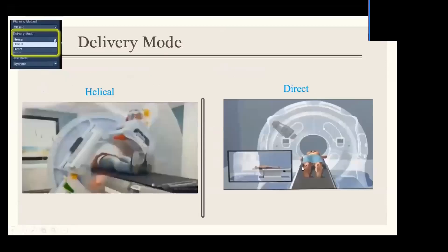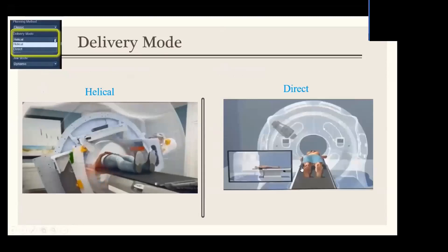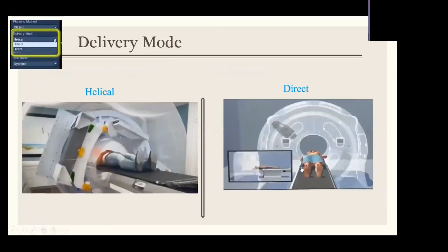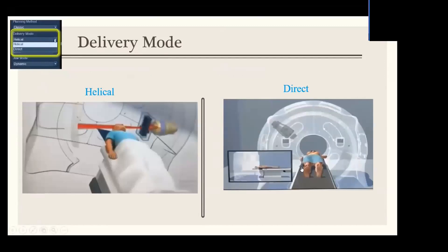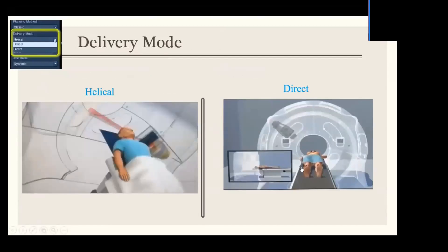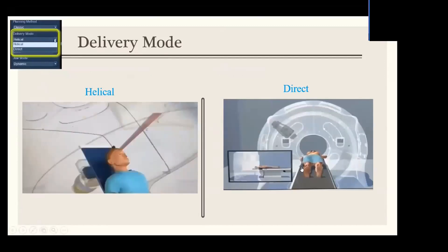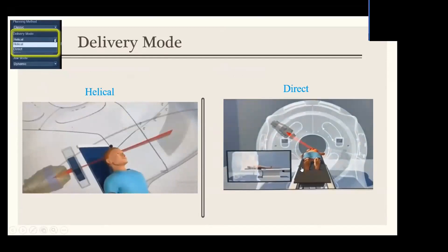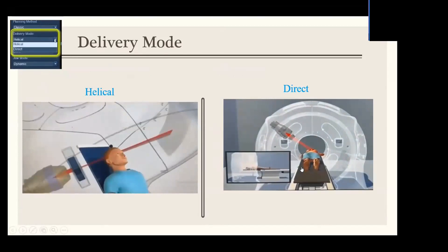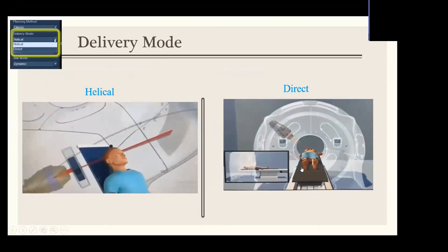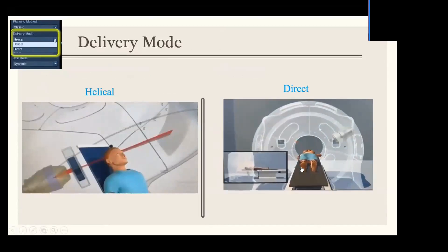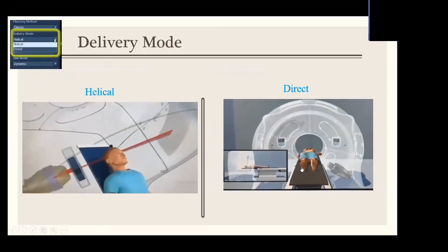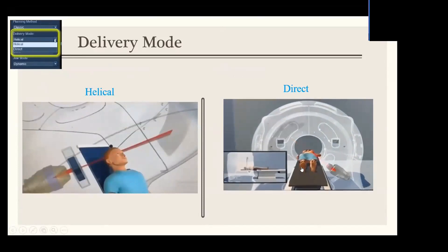In helical mode, the gantry moves continuously during the plan while the MLC modulates the beam; similarly, the couch continuously moves during treatment. On the other hand, if you want to use a couple of tangential fields to treat breast patients, for instance, it might be a good idea to consider the direct mode as well.